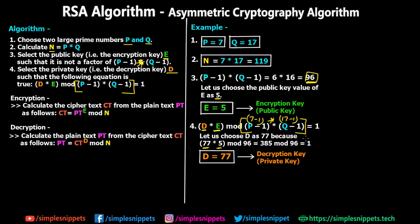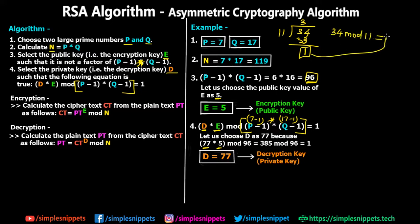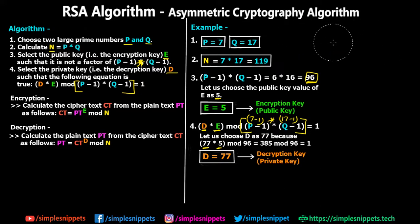Modulo operation takes the remainder instead of the quotient when performing division. For example, 34 mod 11: since 11 × 3 = 33, the remainder is 1, so 34 mod 11 = 1. So D = 77 is our private decryption key. By step four, we now have our public encryption key E = 5 and our private decryption key D = 77.